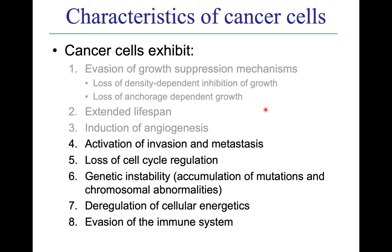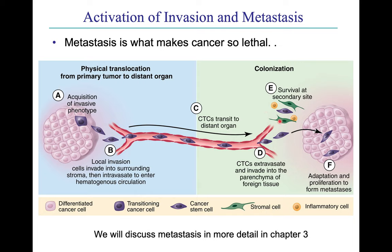The fourth characteristic is activation of invasion and metastasis, which we'll cover in more detail in Chapter 3. Metastasis is often what makes cancer so lethal — the ability of tumors to spread throughout the body makes it very difficult to contain and treat. For metastasis to happen, a cancer cell must detach from the initial tumor, move to and enter the bloodstream, survive the journey, exit the circulatory system, and then start dividing and survive at a secondary site to establish another tumor.